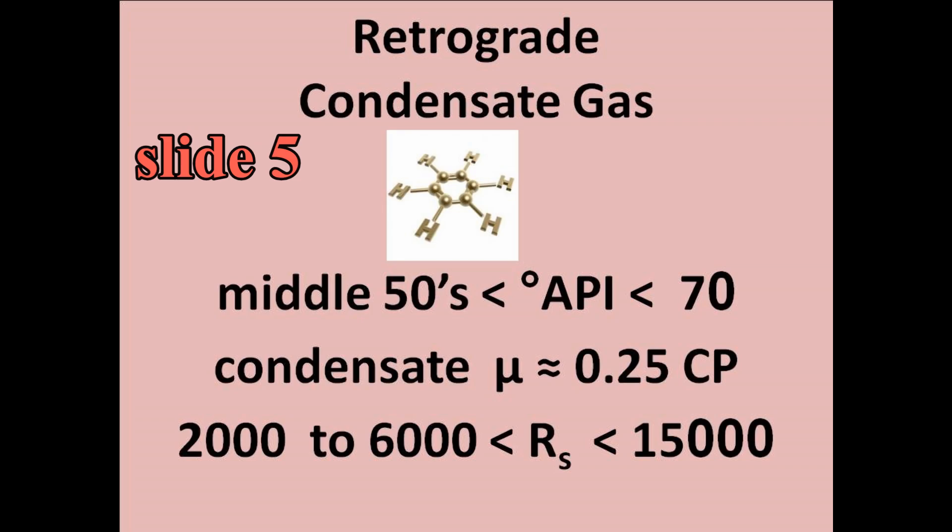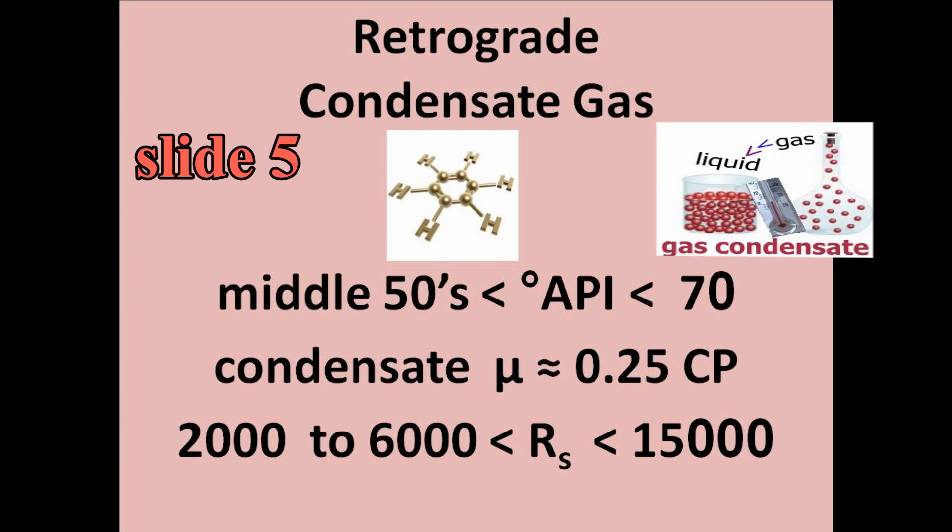Slide five shows the classification of retrograde condensate. In the reservoir, condensates are gaseous, but the gas liquefies, and the condensates drop out at surface temperatures.